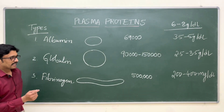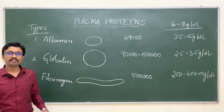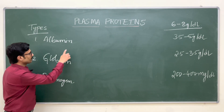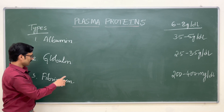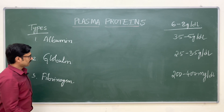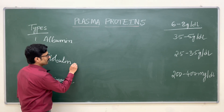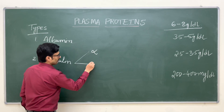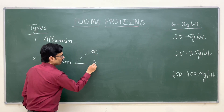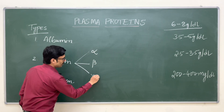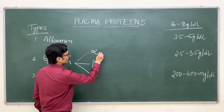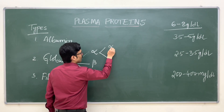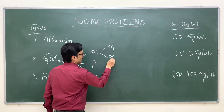Fibrinogen is least in concentration but heavy in molecular weight. The different types of plasma proteins are albumin, globulin, and fibrinogen. There are subtypes in globulins — they are alpha globulin, beta globulin, and gamma globulin. Alpha globulins are further divided into alpha 1 and alpha 2.